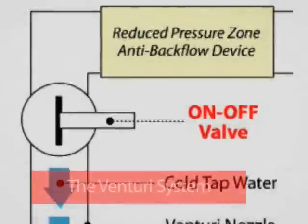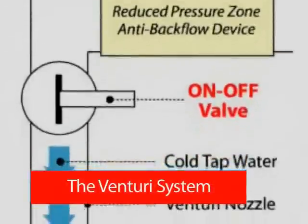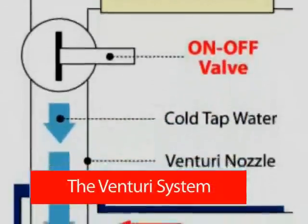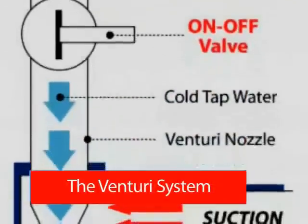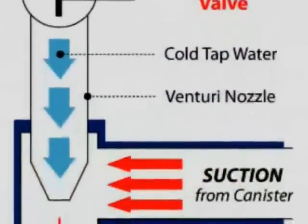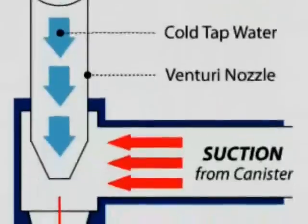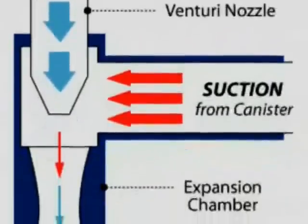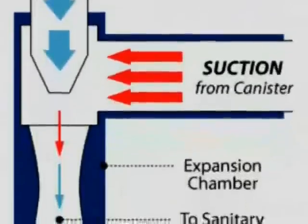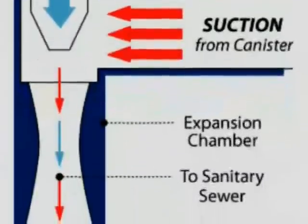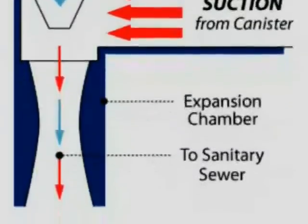The disposal device we are speaking of operates via a Venturi system. The Venturi system uses water flow to operate the device — the device is powered by tap water. The device is designed to dispose of infectious liquid medical waste from a suction canister.